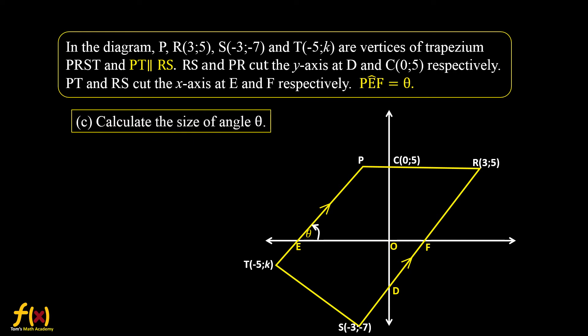Question C: calculate the size of angle theta. Angle theta is between the x-axis and the line PT. We have learned the inclination of a straight line, but unfortunately we don't have the gradient of PT since point P is not available. So we look for another option — RS is parallel to PT, as given in the question. Therefore, we can use the gradient of RS. The gradient of PT is the same as the gradient of RS, which is equal to 2.